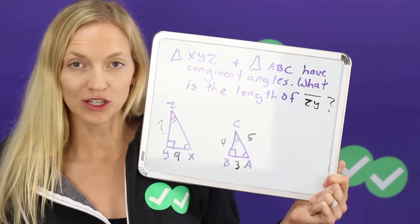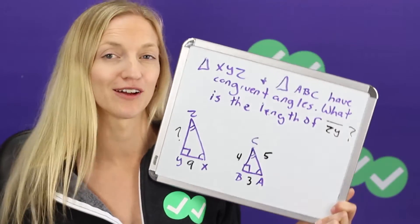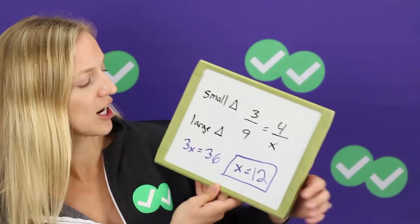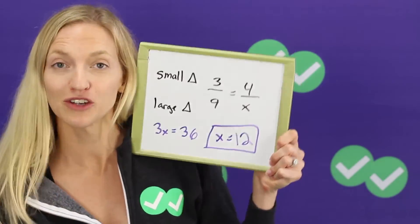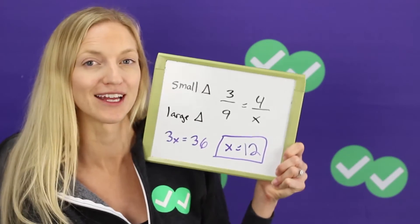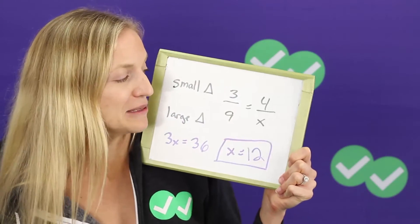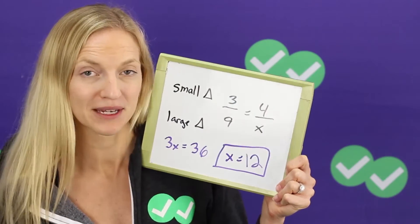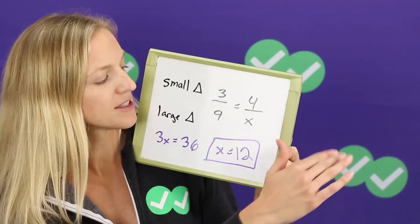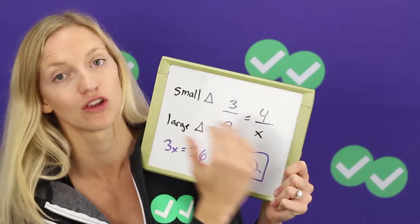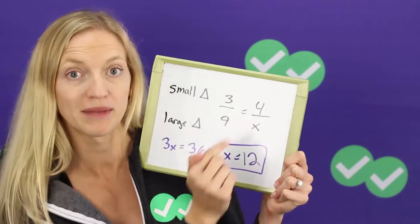So what you want to do is go ahead and set up a proportion. Remember similar triangles have proportional sides, so let's set up a proportion to solve it. So small triangle and large triangle. Now the trick with proportions and cross multiplying, if this is one of your favorite strategies to solve problems on the ACT, it's one of mine, is to make sure you don't mix them up, keep them straight. So small on top, large on bottom. Now you could reverse that, you could have large on top, small on bottom, but don't mix up your numbers.